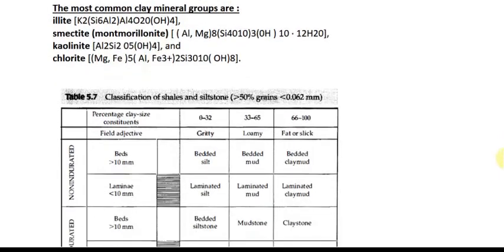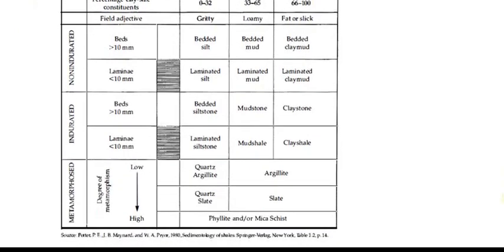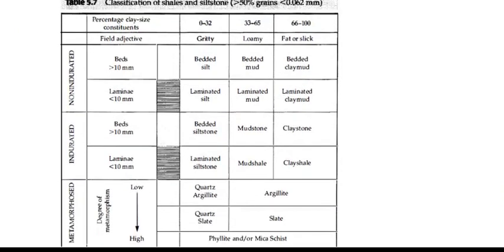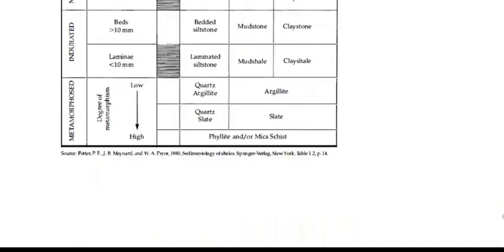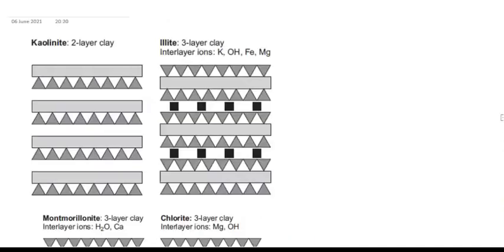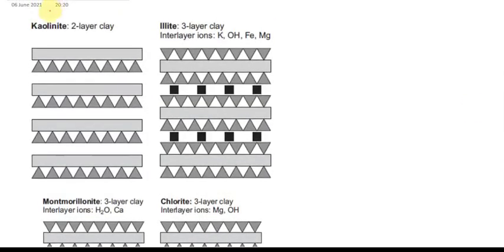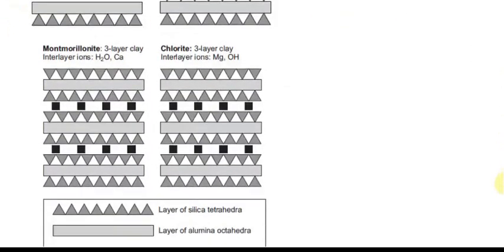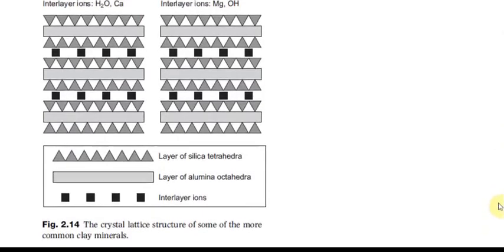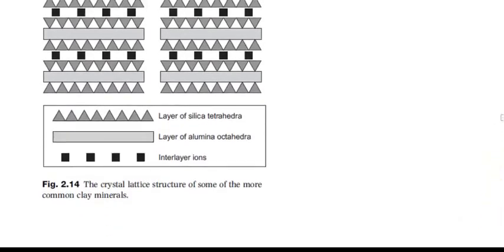The most common clay minerals in shale are: illite, smectite, kaolinite, and chlorite. Kaolinite is a two-layer clay mineral. Kaolinite and smectite are characteristic of younger shales. We will study clay mineralogy in more detail in the mineralogy section.